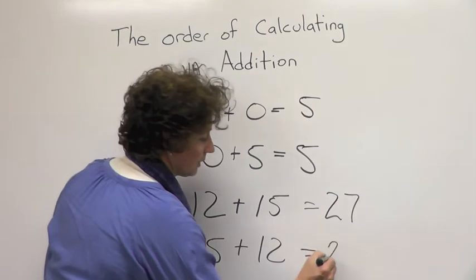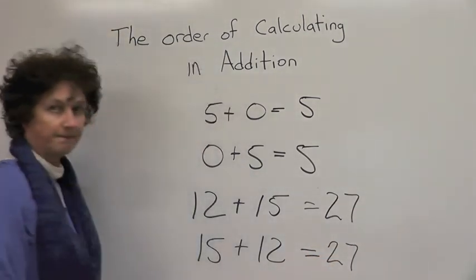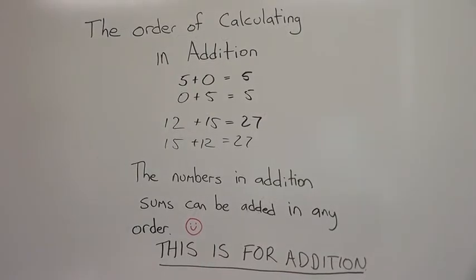15 plus 12 equals 27. The numbers in addition sums can be added in any order. This is for addition.